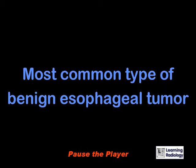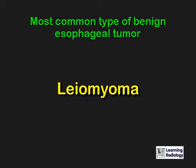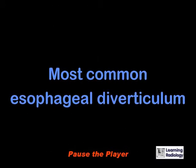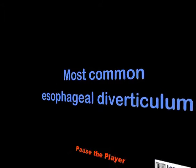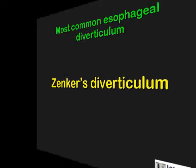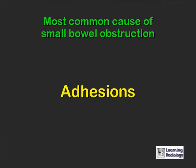What is the most common type of benign esophageal tumor? A leiomyoma. What is the most common esophageal diverticulum? Zenker's diverticulum. What is the most common cause of a small bowel obstruction? Adhesions.